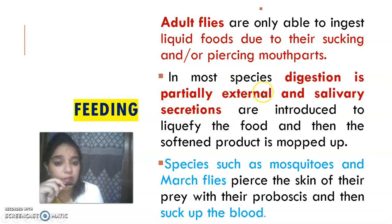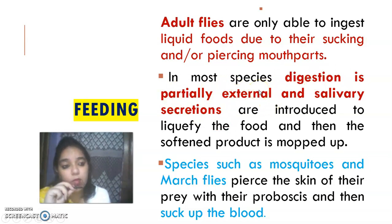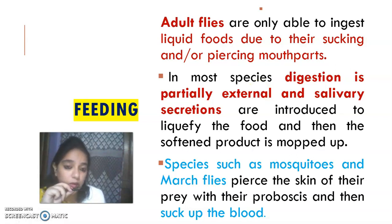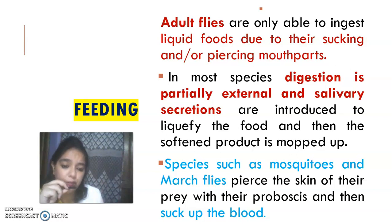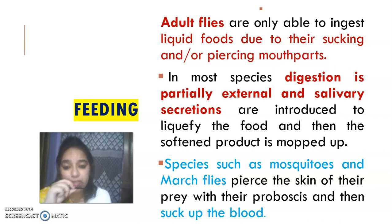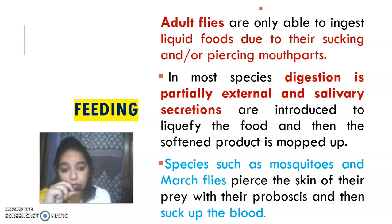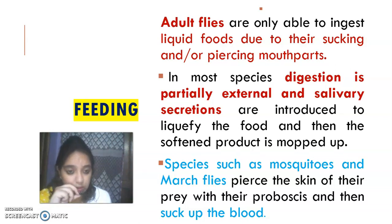Partially external means: if you eat glucose, it enters the mouth where salivary amylase acts on it, and after that it enters the digestive system — stomach and intestine. We call this type of digestion internal. Now the house fly is different — if there is solid food like sugar crystals, the house fly will come to feed on it.